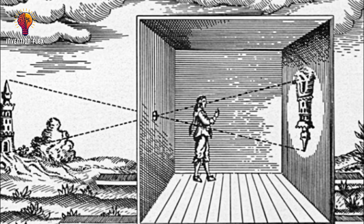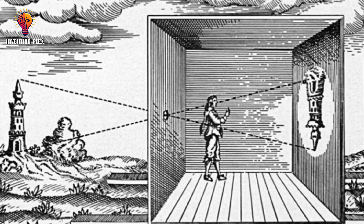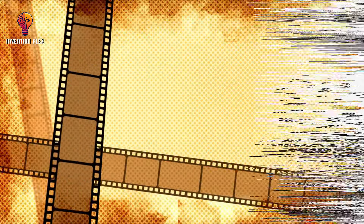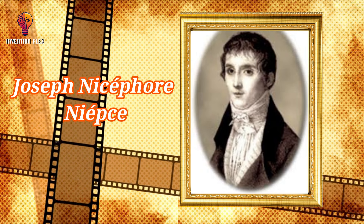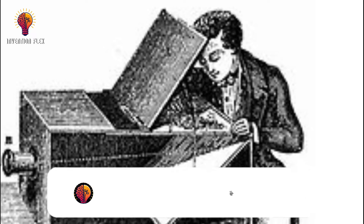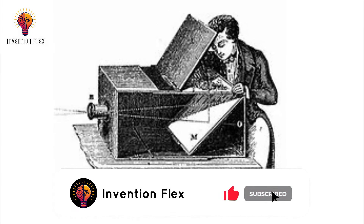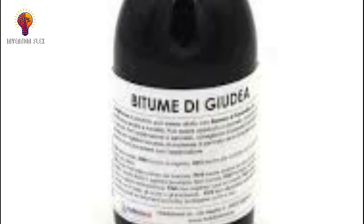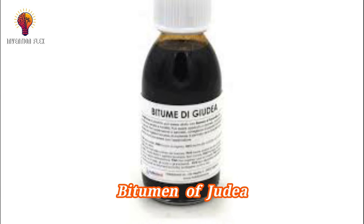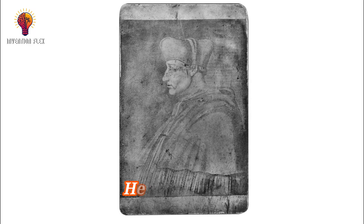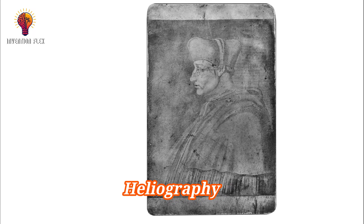Camera obscura represents one of the first attempts at understanding and making use of light's reflection and refraction properties. It wasn't a camera until 1816 when Joseph Nicéphore Niépce used it to create the first ever photograph. What Niépce did was find a way to record the image projected by the camera obscura. He used a light-sensitive material called bitumen of Judea, or asphalt of Syria, a semi-solid oil, mixed with pewter. The result was a permanent image that would survive after the camera obscura was closed.